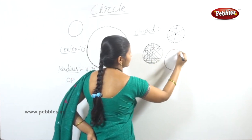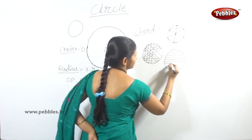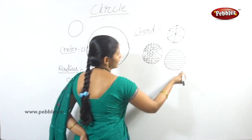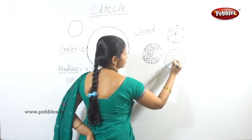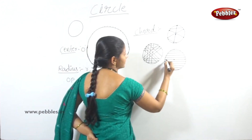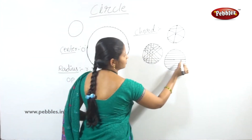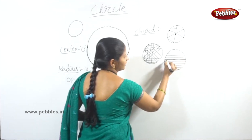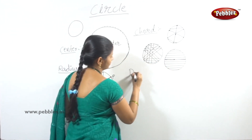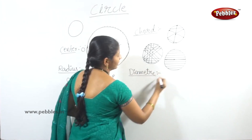A chord that passes through the center of the circle is called the diameter. Diameter is denoted by the small letter d. We can draw the chord and if it passes through the center, it is called the diameter.